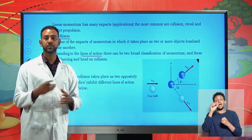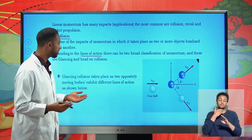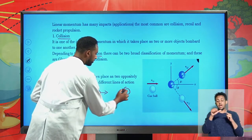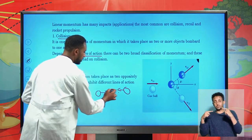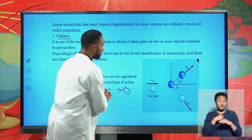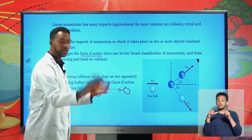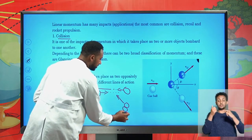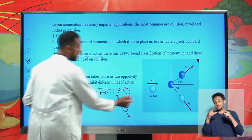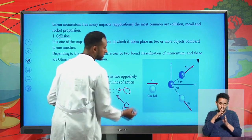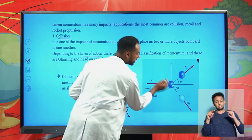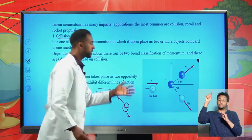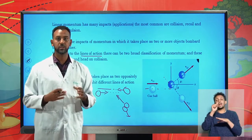Glancing collision has two different lines of action before and after collision. Suppose you have two objects — object one is moving in one direction and another object is moving in another direction. These are their lines of action before collision. After they collide together, their lines of action will change. For example, one object might move in one direction and the other object in a different direction. Like a cue ball moving in one direction and colliding with another object — it changes its direction, while the stationary object begins to move. This type of collision is known as glancing collision.